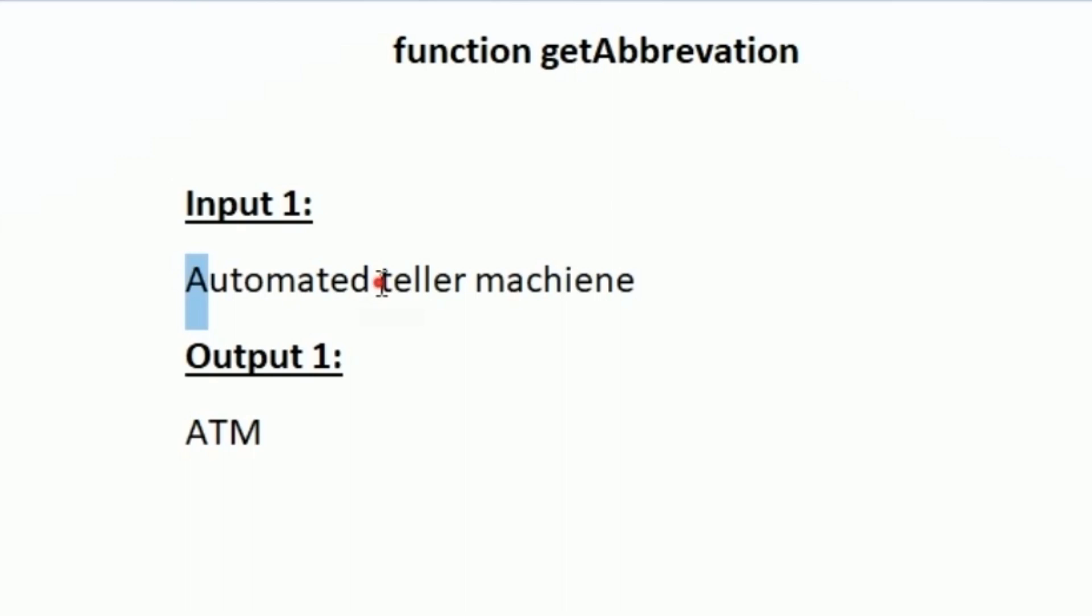Then the next word is teller and the first character is T, and then the next word is machine so the first character is M. We have to combine all these three characters and return it in our output, so it is ATM. We should also convert the characters into uppercase, so even though the T and M are in lowercase, we have to print them in uppercase.